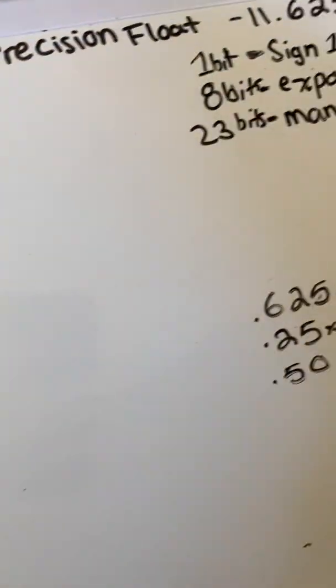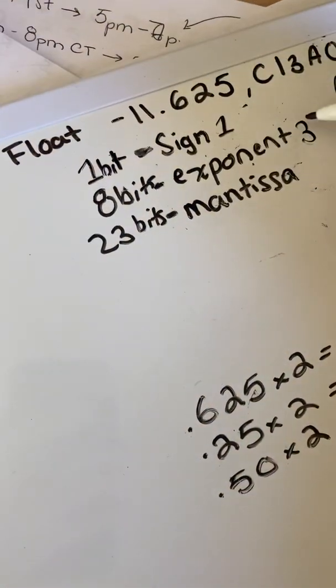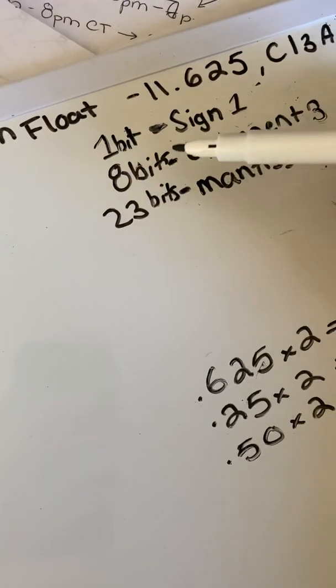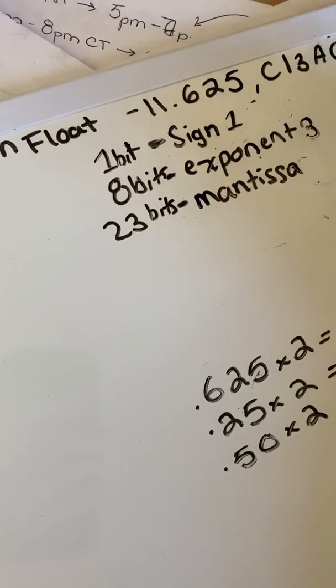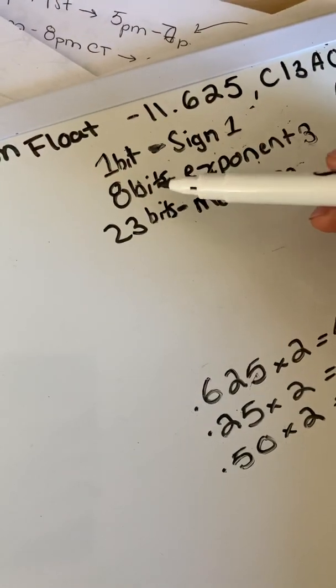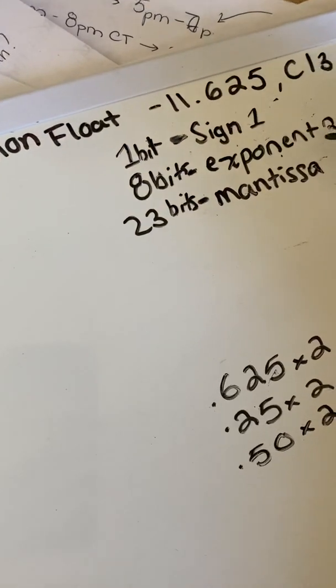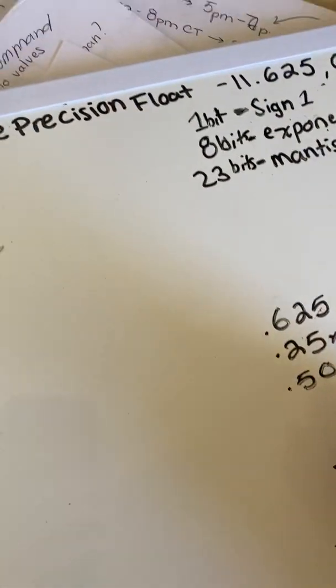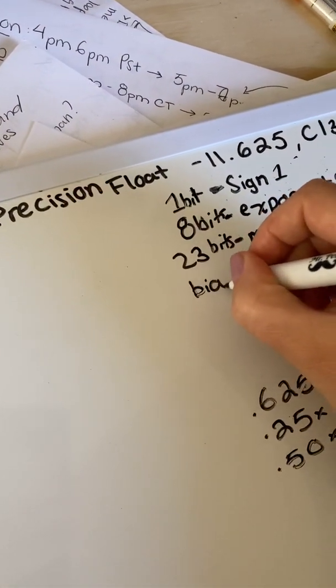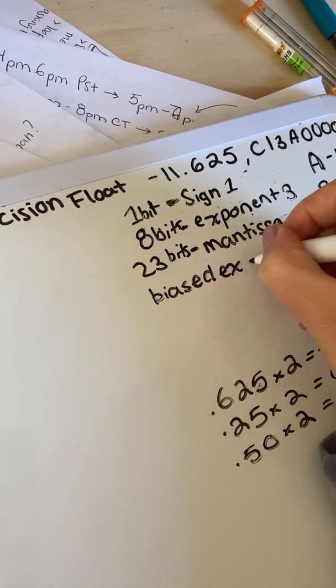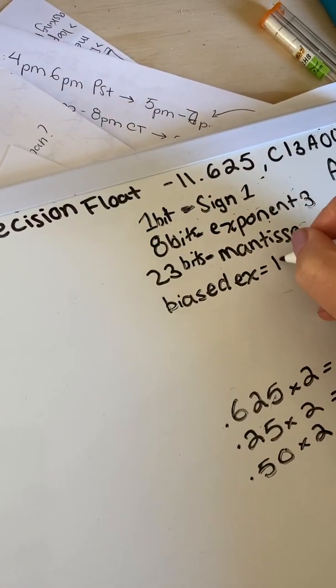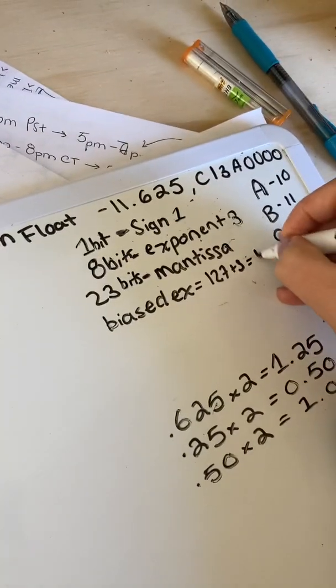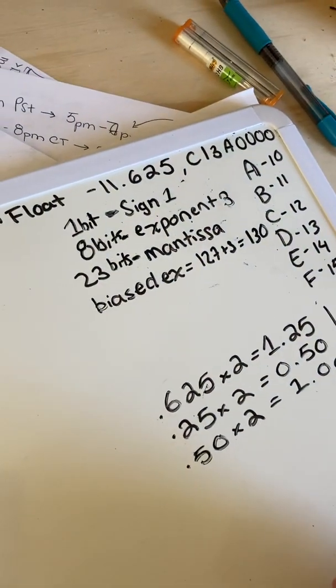Now it's pretty obvious that the number three is not represented with eight bits. So we need to make sure that we represent it with eight bits. And the way that we do that is to bias the exponent. The way that we bias the exponent is by adding 127. So the biased exponent is equal to 127 plus three, which is equal to 130.